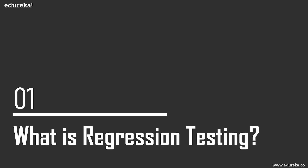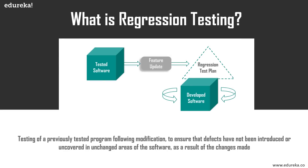A regression test is a system-wide test intended to ensure that a small change in one part of the system does not break existing functionality elsewhere. Without regression testing, it's quite possible to introduce intended fixes that create more problems than they solve. For example, you take your car to a mechanic to fix the air conditioning — it gets fixed, but now the gas tank sensor is no longer working. Regression testing is the process of hunting for those unintended changes.